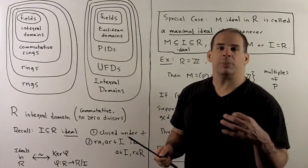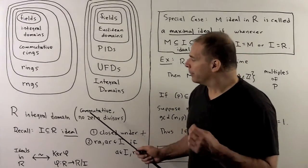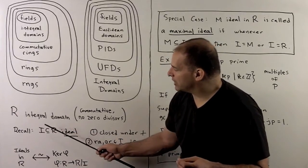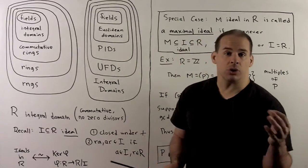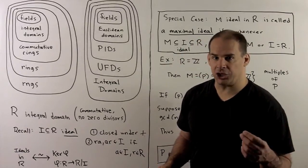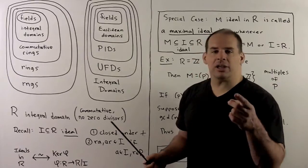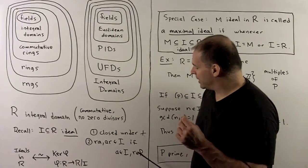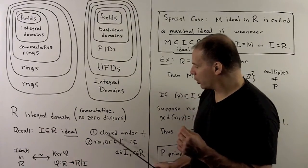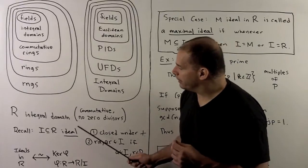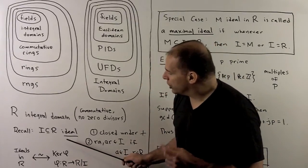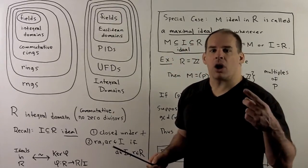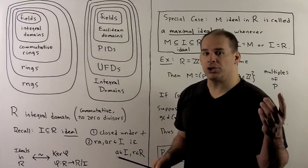To begin, we'll consider special types of ideals. Recall, we're working in an integral domain. A subset I of R is called an ideal if it's closed under addition and closed under multiplication by any ring element — not only when we multiply two ideal elements together, but when we multiply an element of the ideal by any element of the ring, in either order. We've seen that an ideal is the same as the kernel of a ring homomorphism — ideals are to rings what normal subgroups are to groups.